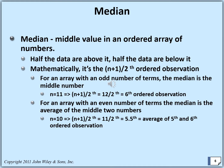For an array with an odd number of terms, the median is the middle number. If n equals 11, then n plus 1 is 12, divided by 2 gives 6, so the sixth observation will be the median. If we have an even number of observations, we have two middle values, and the median will be the average in between. For example, if n equals 10, then n plus 1 divided by 2 is 5.5, so we take the fifth and sixth observations and get their average — that will be the median.